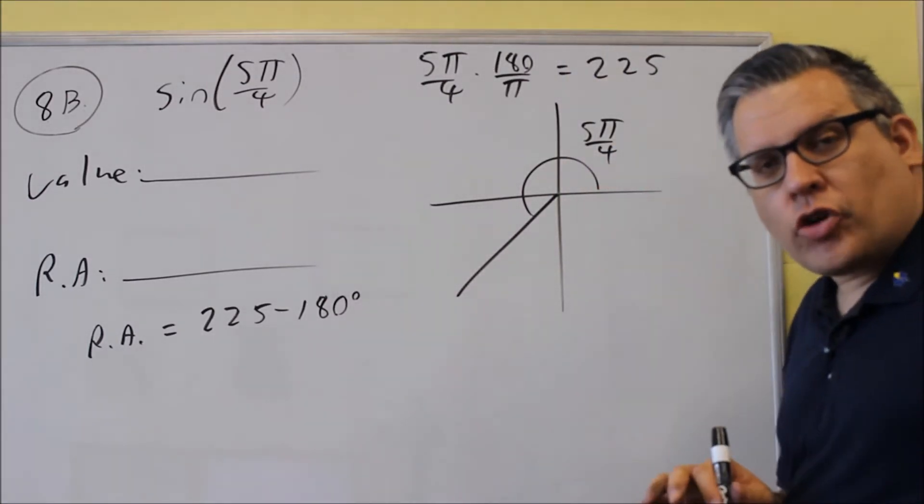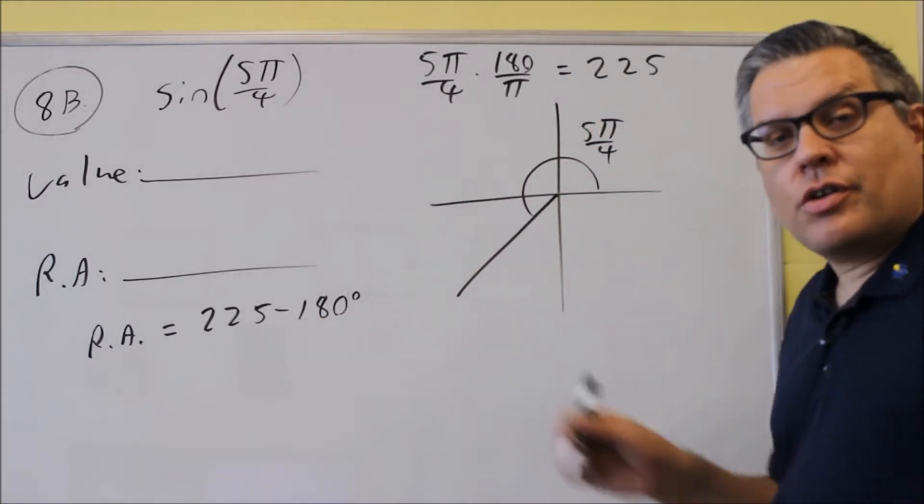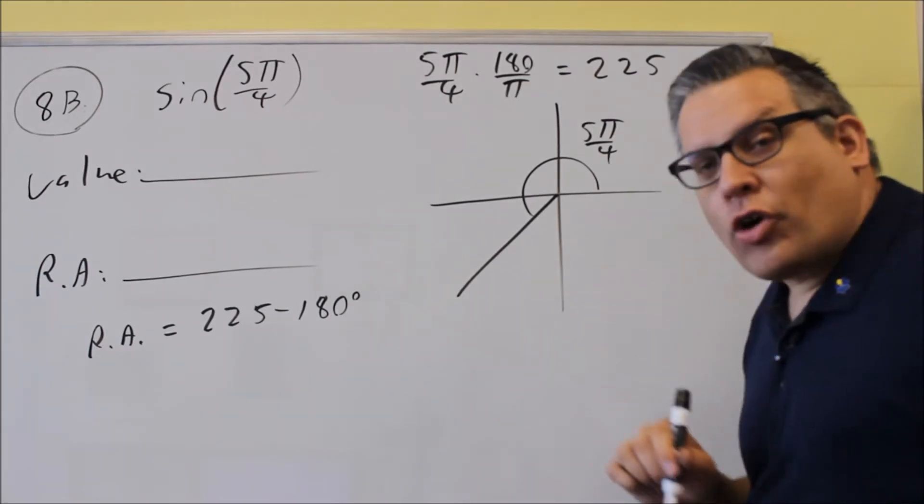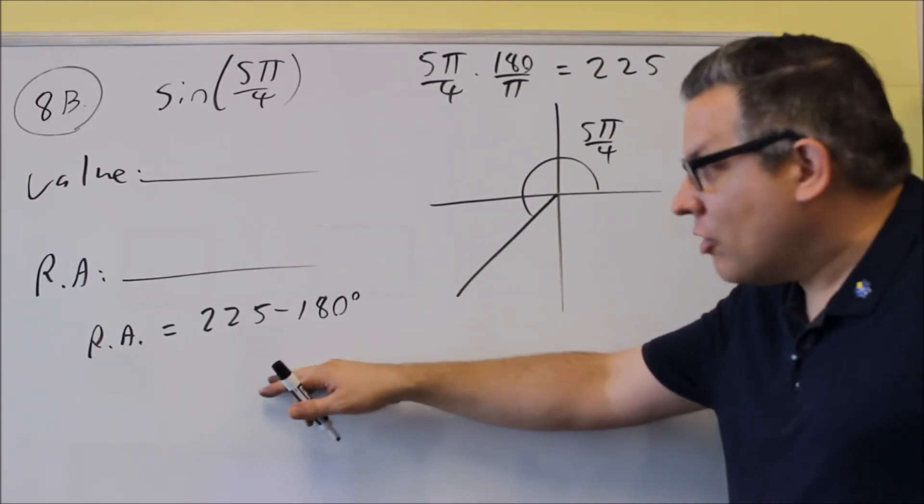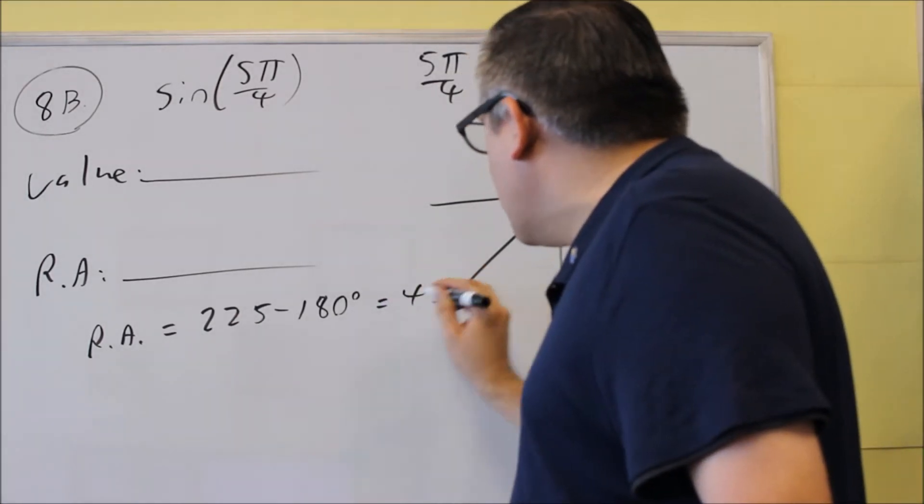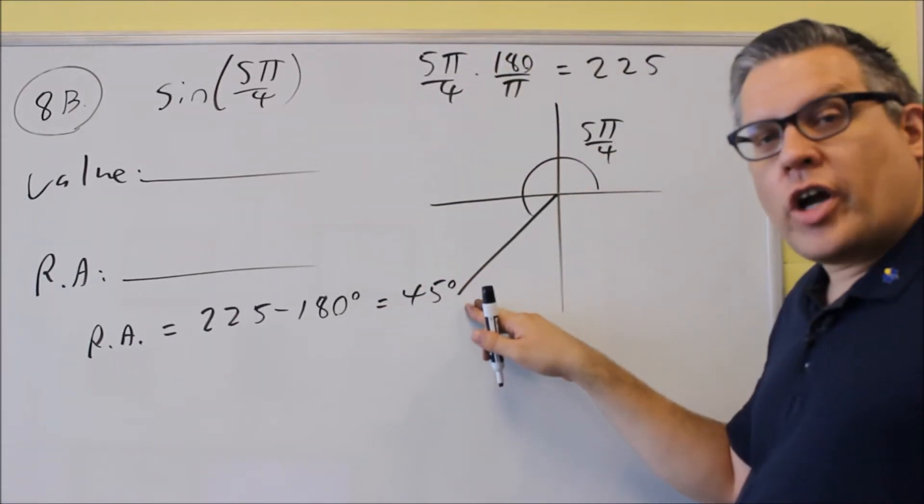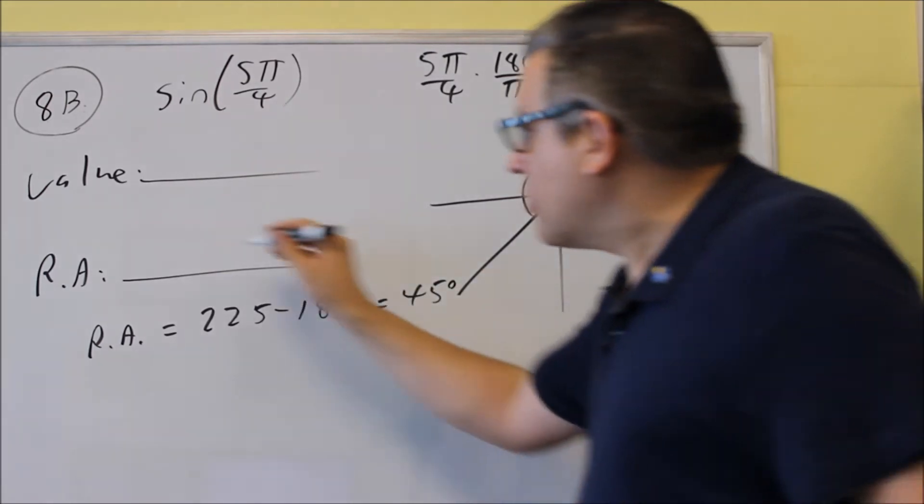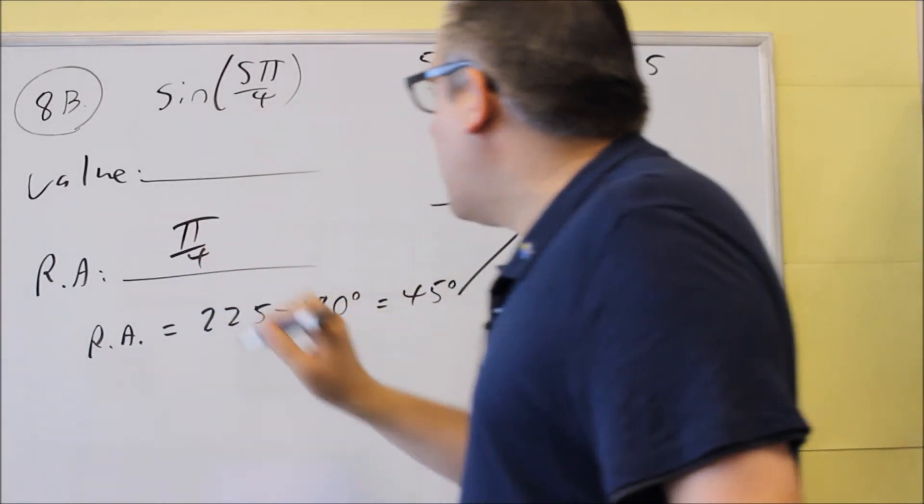So you want to refer to the diagram again of the reference angles. So I had that before on 8a, so you can look back at that video for it. It's also in the notes. This is going to give you 45 degrees. We're going to write our reference angle in terms of radians. That's π/4.